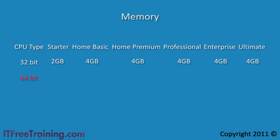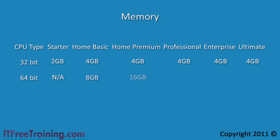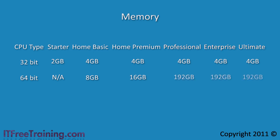If you are running a 64 bit system, the amount of RAM you can access changes quite a bit. The Starter edition is not available in 64 bit. The Home Basic edition, available in emerging markets only, jumps to 8 gigabytes. The Home Premium edition supports 16 gigabytes, which is more than enough for the average home user. All remaining editions support 192 gigabytes of RAM. This is plenty, and while motherboards supporting that much RAM are rare in today's market, they do exist.